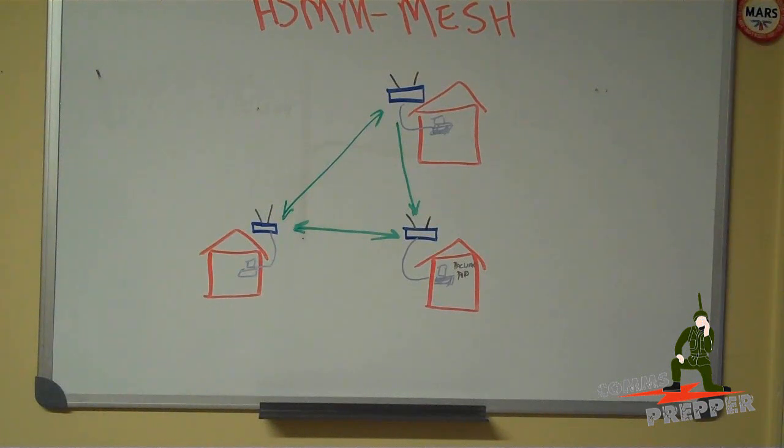Now, channel 1 on LinkSys routers actually shares frequencies with the 13-centimeter band of the amateur radio service. These guys wrote this software and figured out how they could convert an old LinkSys router into a 13-centimeter amateur radio to do high-speed data transfers.